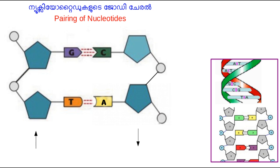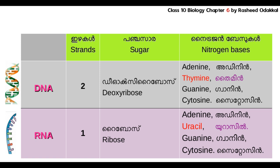In DNA, the base adenine pairs only with thymine, and guanine pairs only with cytosine. RNA molecule is made up of four kinds of nucleotides: adenine, uracil, cytosine, and guanine nucleotides. Since RNA has one strand, no base pairing is possible.